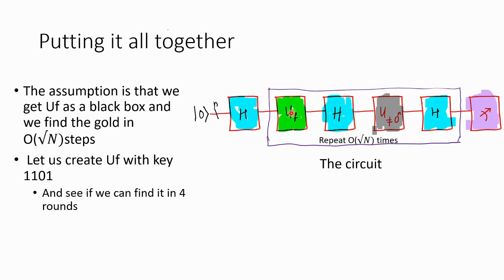The assumption is that we have the oracle U_f as a black box and we find the gold in that black box in order of root n steps. So let us create a U_f with key 1101. It is a four-bit number, which means there are a maximum of 16 elements in the array. Root of 16 is 4 — let us see if we repeat this four times we can find 1101 with a very high probability.